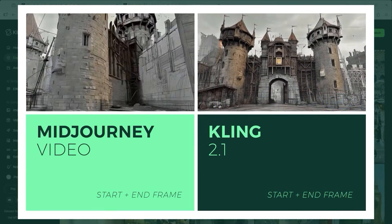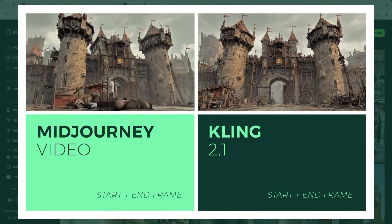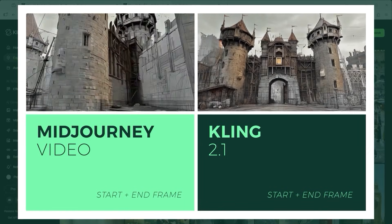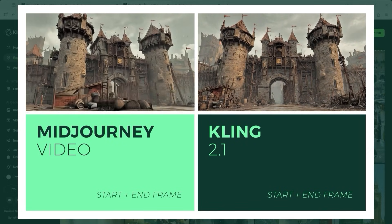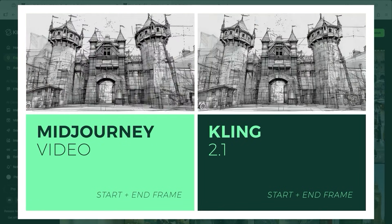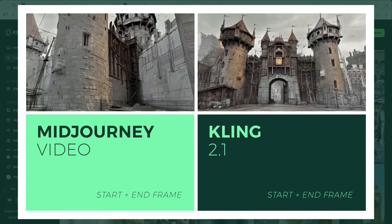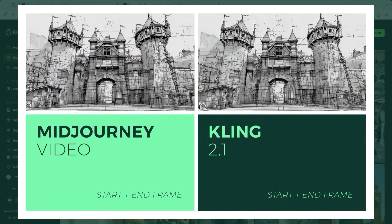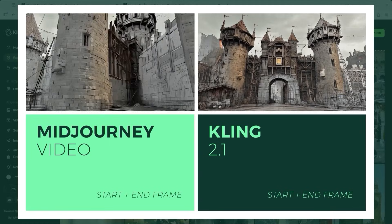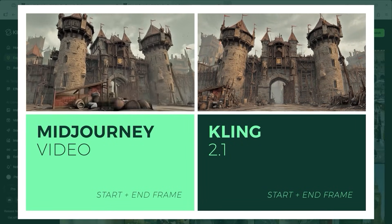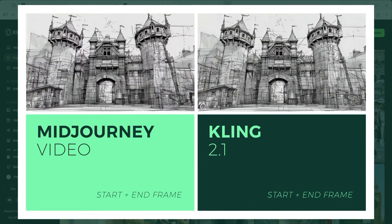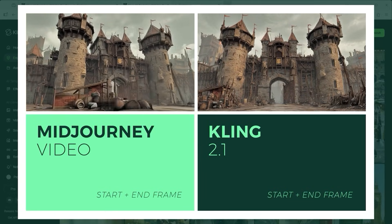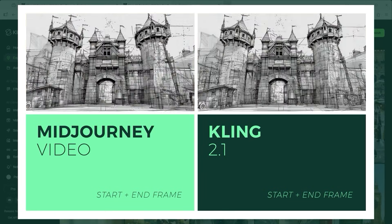Example 3: for fans of 3D or adventure games, this one's a treat. A real world emerges from a construction sketch, complete with an open castle gate that basically says press start. The prompt this time was super simple: camera orbits around. Midjourney nails it with a visually rich interpretation. Kling stays pretty static.